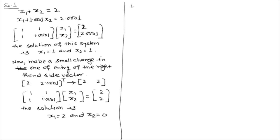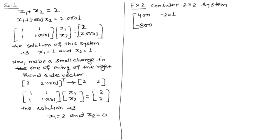In the same way, take one more example. Here we have again a 2 by 2 system where the coefficient matrix is [400, -201; -800, 401], the unknown vector is [x1, x2], and the right hand side vector is [200, -200].